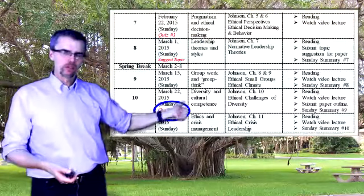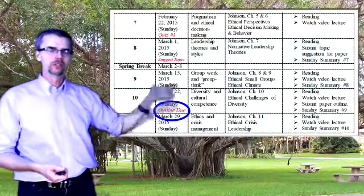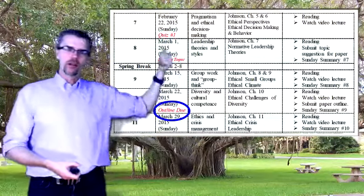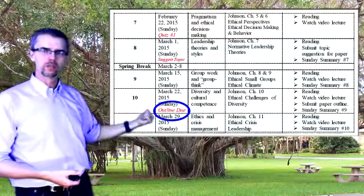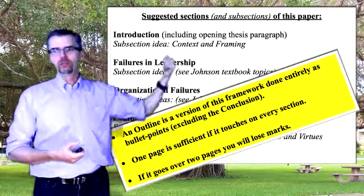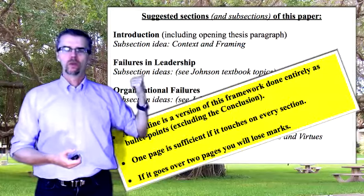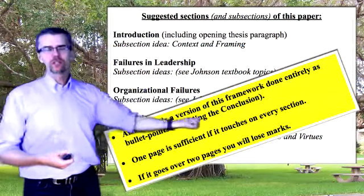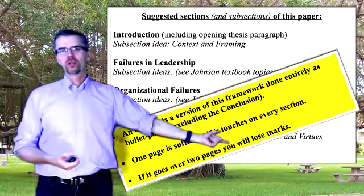Back to version 5 of the syllabus — your outline will essentially be done once you walk through quiz number two, and it's due on March 22nd. An outline is a version of this framework done entirely as bullet points; it does not include anything related to the conclusion, is not written in prose, and has no full sentences. One page is sufficient if it touches on every section; if it goes over two pages, you will lose marks.